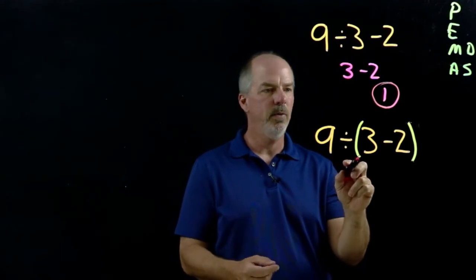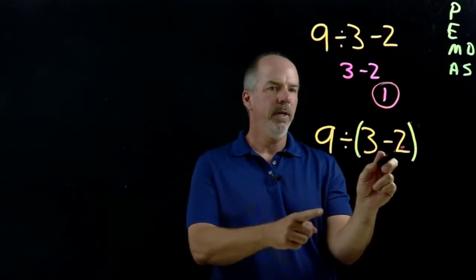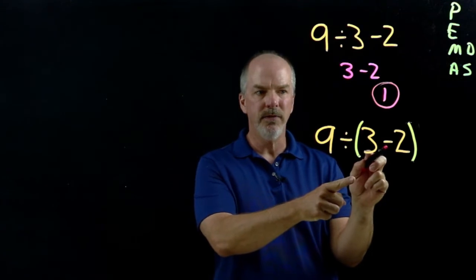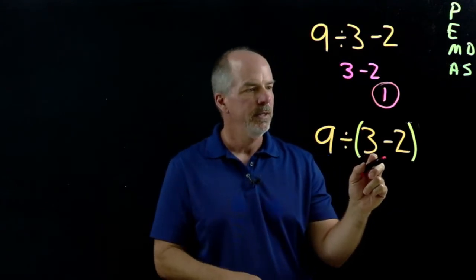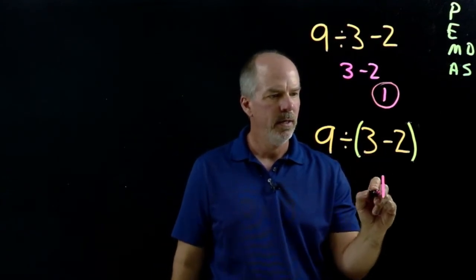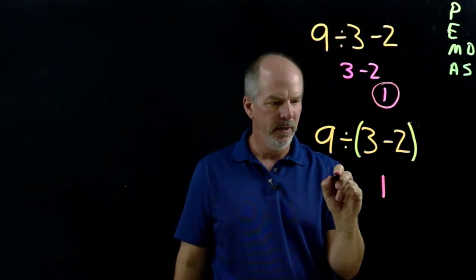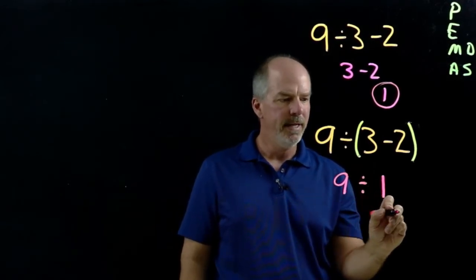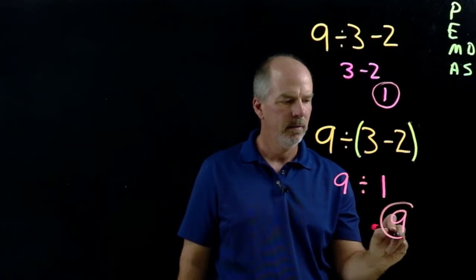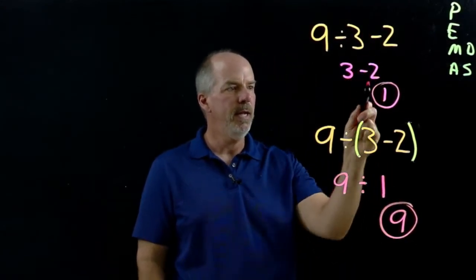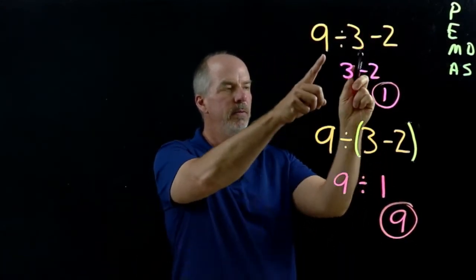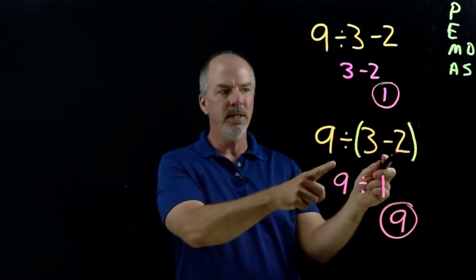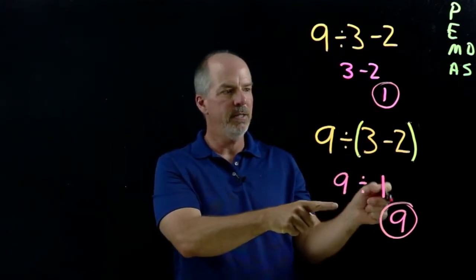In this example we have parentheses, so we're forced to do what's inside the parentheses first. So 3 minus 2 is 1, and then we still have 9 divided by 1, which is 9. You can see how the location of the parentheses and just having parentheses completely changes our answer.